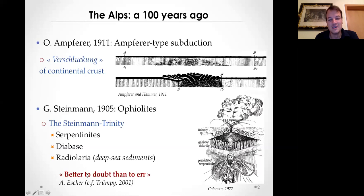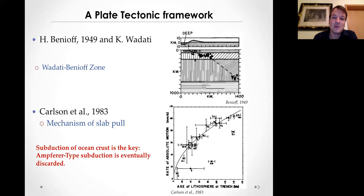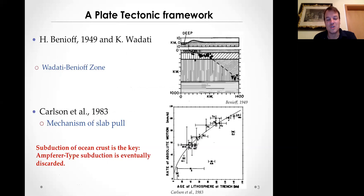The Alps did not really play a role in the development of a plate tectonic view of the world. This framework came about through geophysicists who were able to map the Wadati-Benioff zone along convergent margins and the seismicity of down-going slabs, but also by mapping mid-ocean ridges forming in oceanic environments.